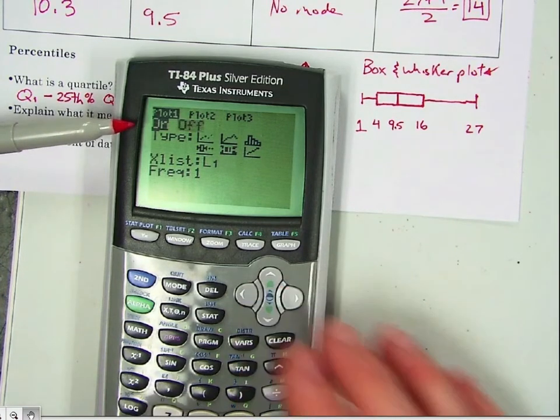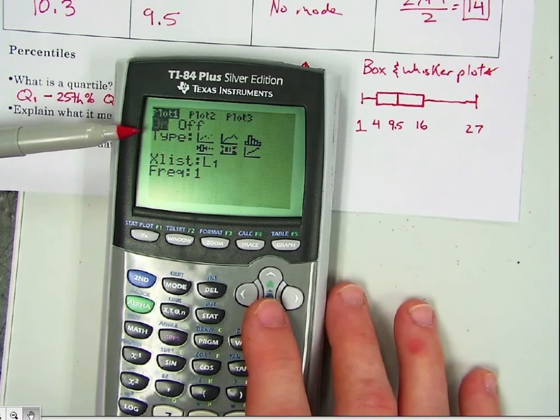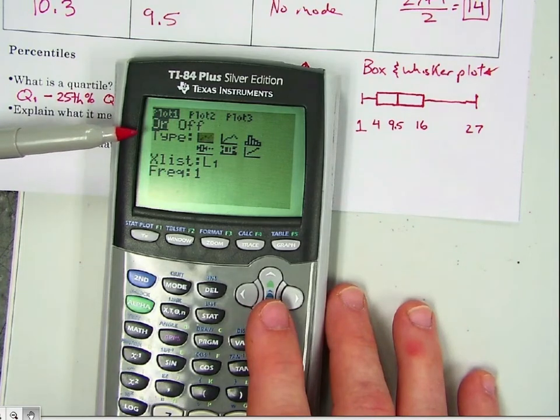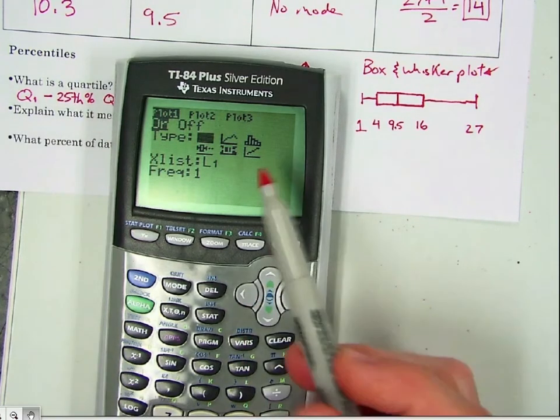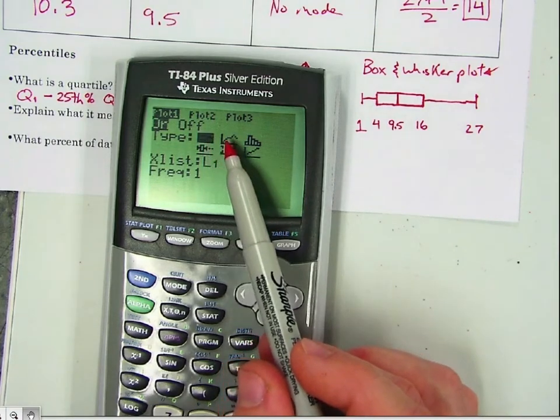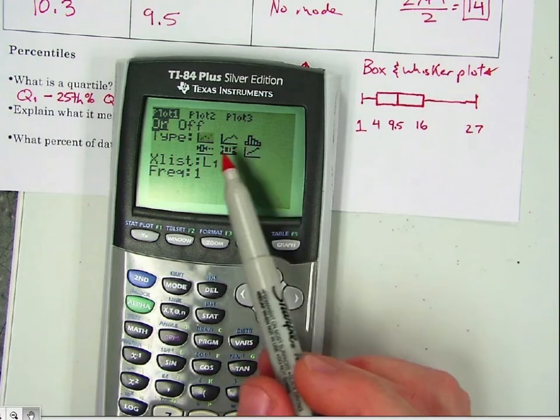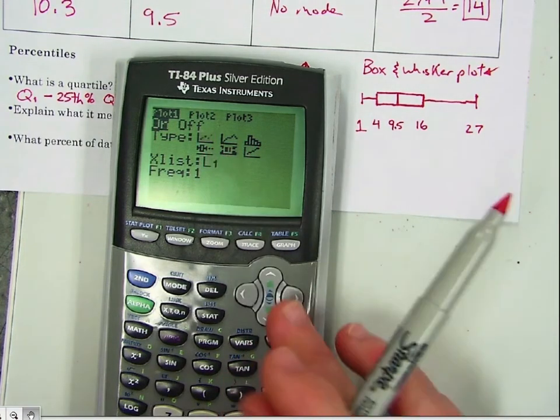And you want to turn, you can turn the plot off, you can turn the plot on. So go ahead and turn this plot on. And then you can choose what type. So push down once. And there's six different types you can do. Here you can just do a scatter plot, here you can actually make a frequency polygon, here you can make a histogram, and then here you can make a box and whisker plot.